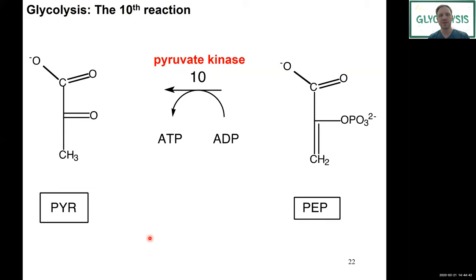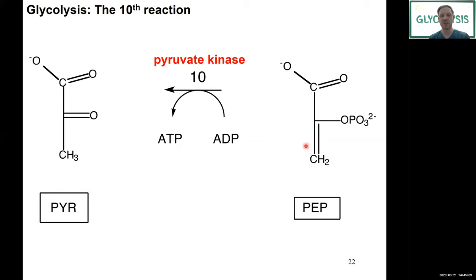The final step is again substrate-level phosphorylation: from PEP, we transfer the phosphoryl group to ADP, generating ATP. The dephosphorylation product of PEP is pyruvate. Two PEP molecules are dephosphorylated, two ATPs are generated, and two molecules of pyruvate are produced. The enzyme is called pyruvate kinase. This is the end of glycolysis.